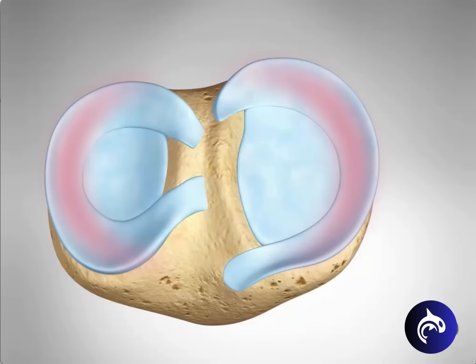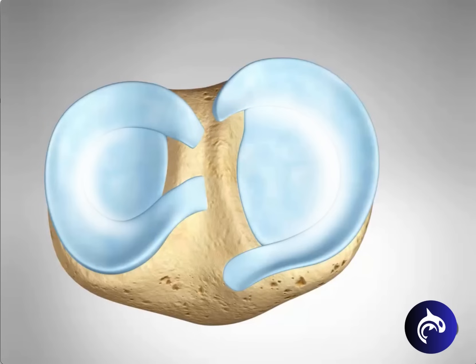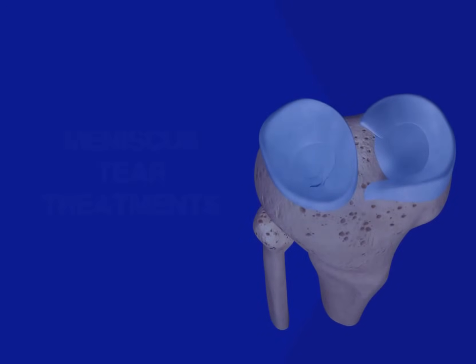The middle body has fewer blood vessels but still some blood flow available. Or the white zone, containing no blood vessels and receiving very little to no blood flow.